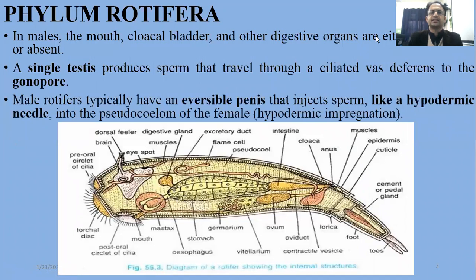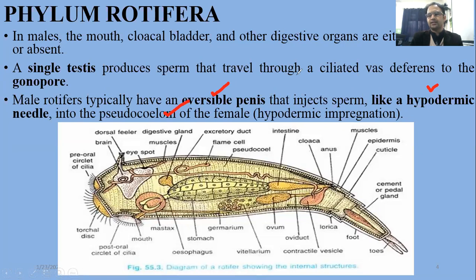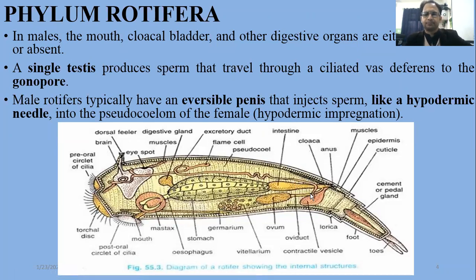Sperm travels through a ciliated vas deferens to the gonopore. The male has an eversible structure which is used for sperm transfer — like a hypodermic needle — into the body of the female.